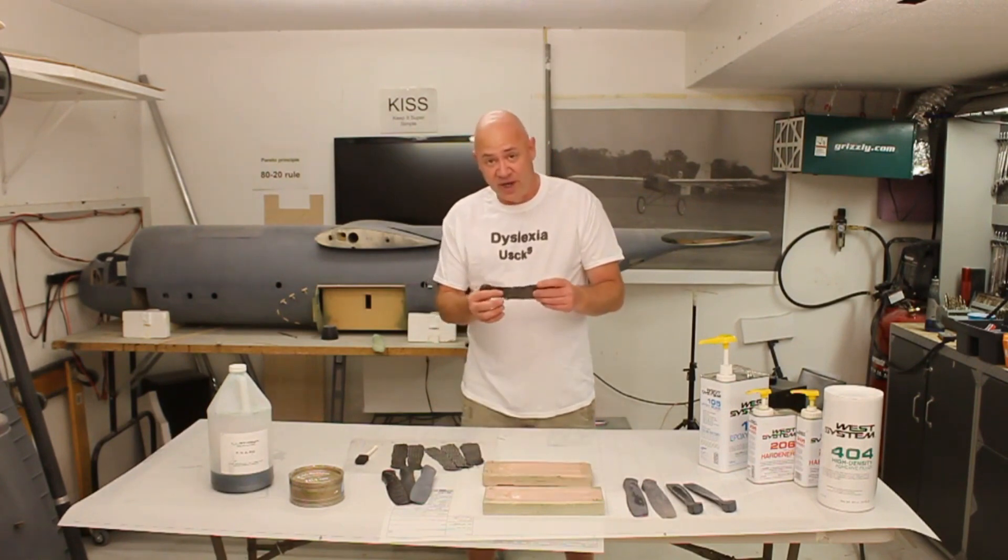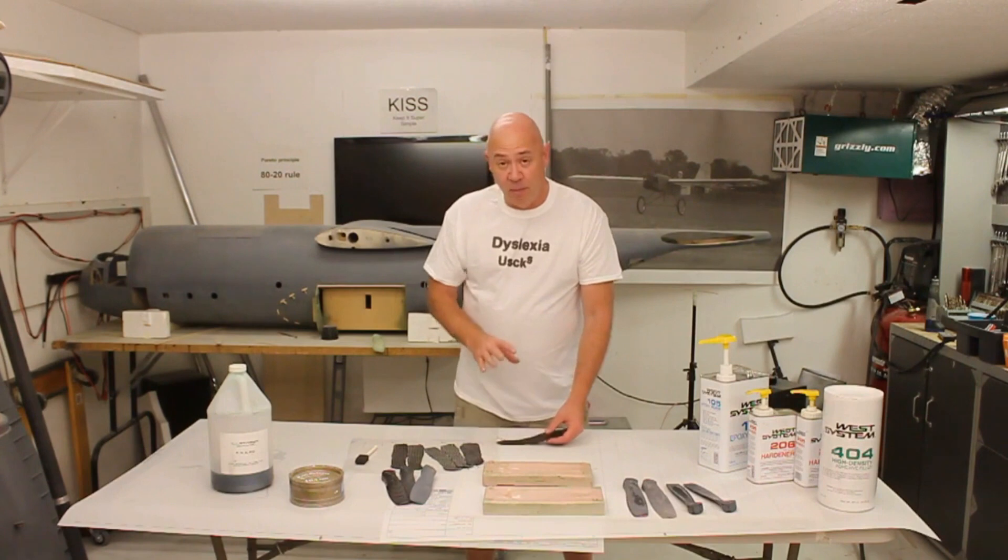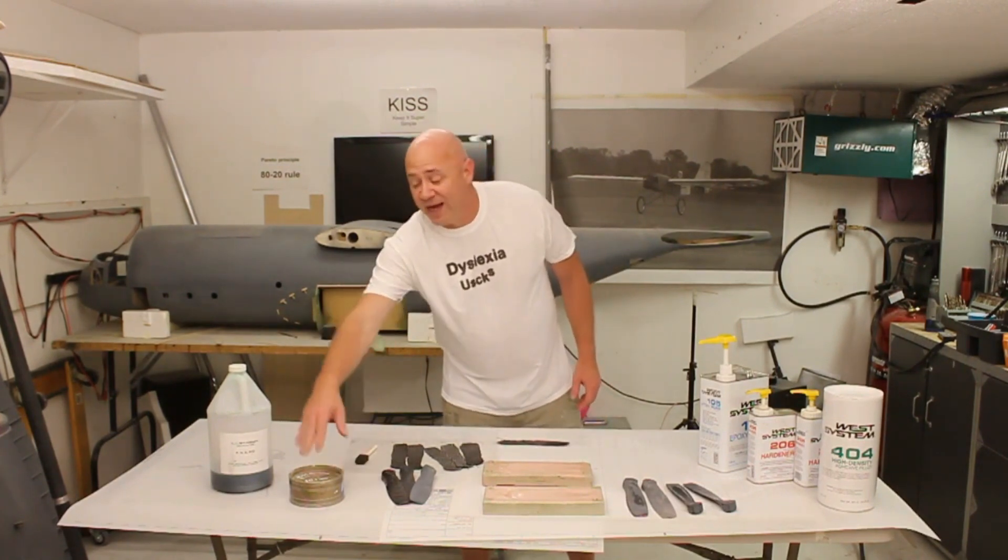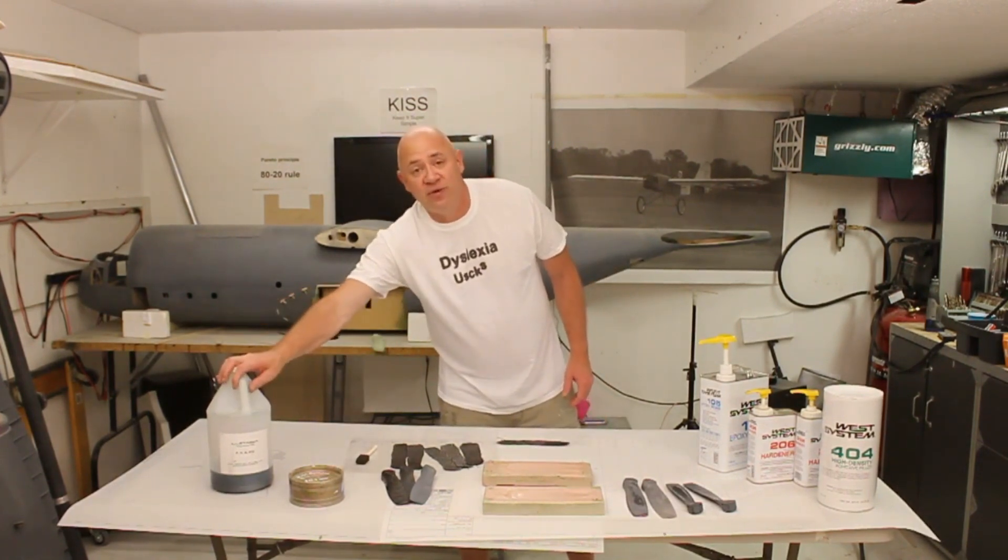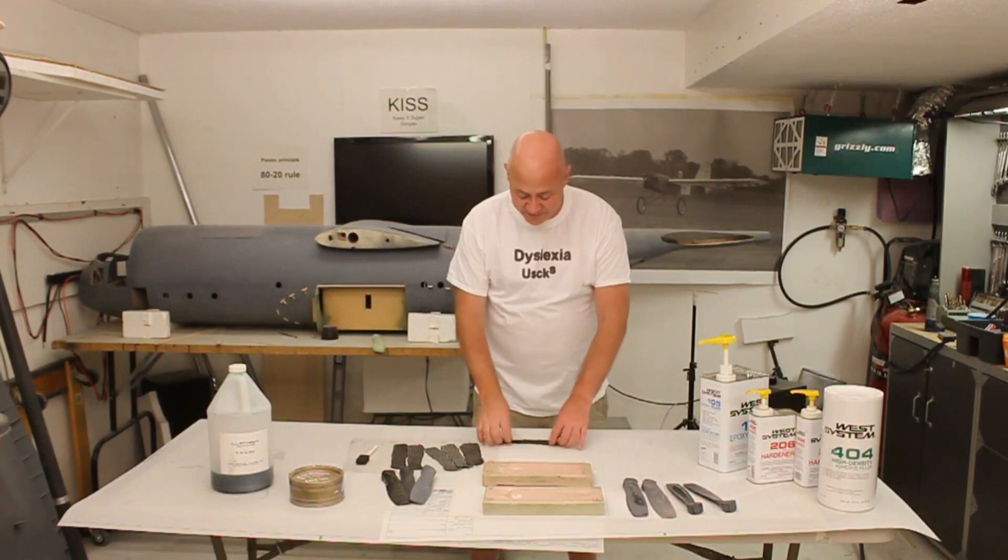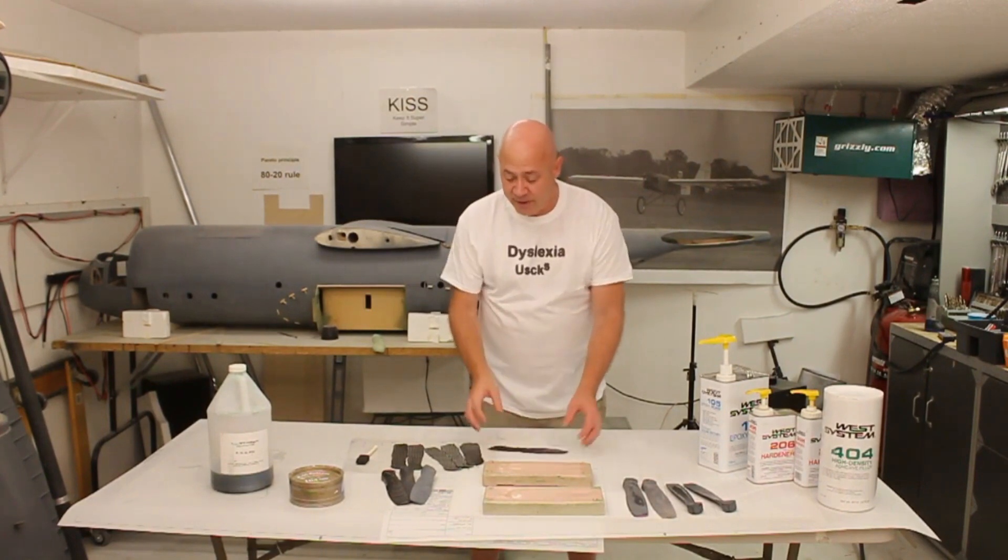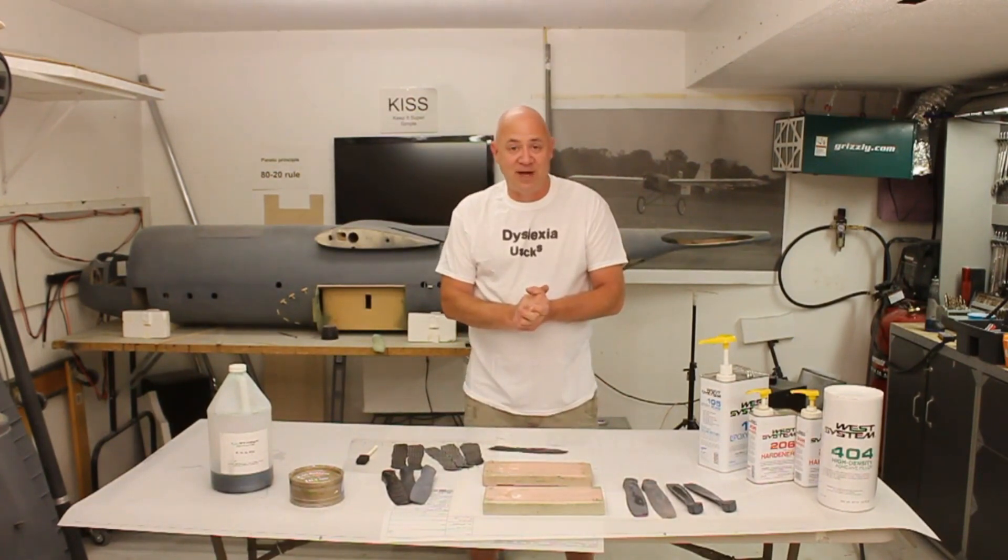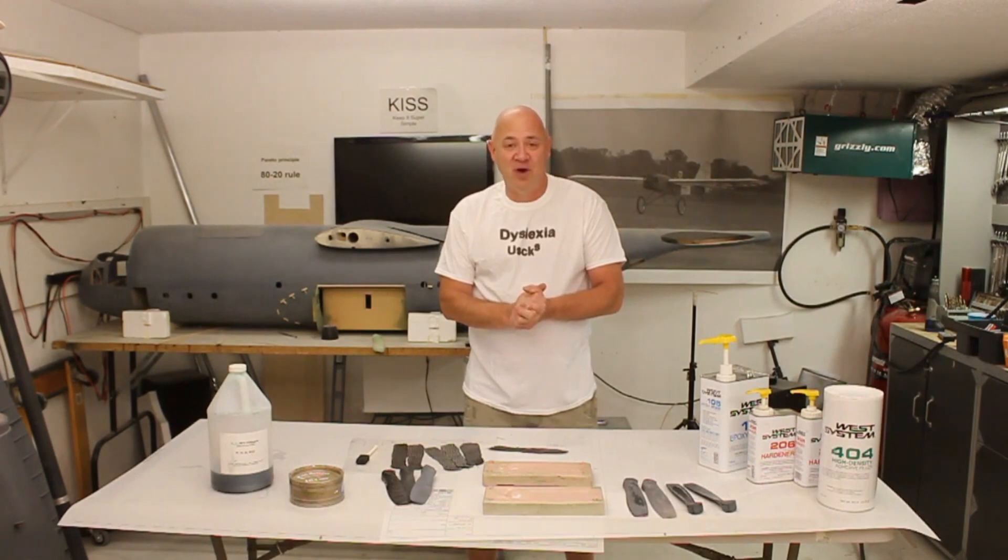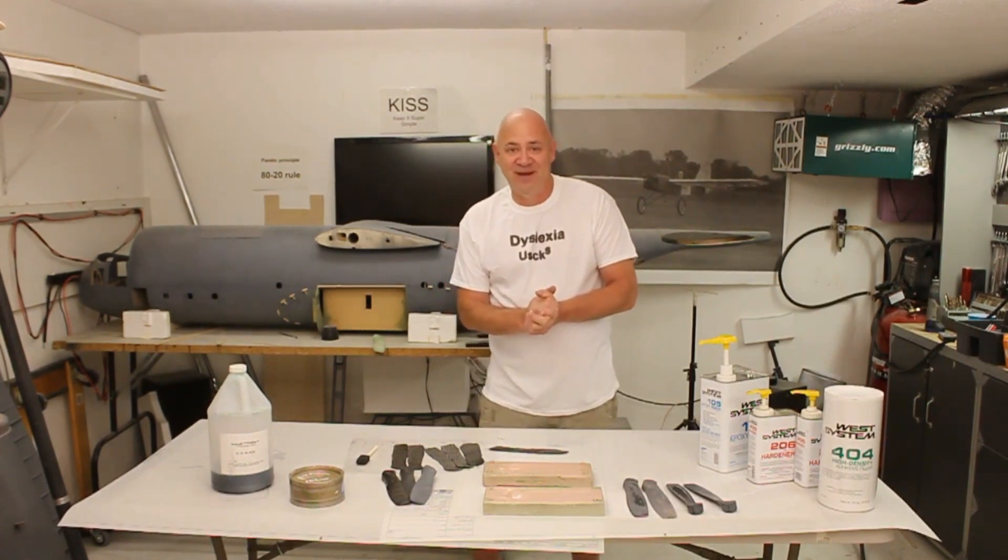Basically, we're going to take carbon fiber, cut it out, and place it in the mold. First, we make sure we wax it and use mold release. Put the resin in, put the carbon fiber in, and if all works out as I think it will, we will have some carbon fiber propellers. Thanks a lot everybody.